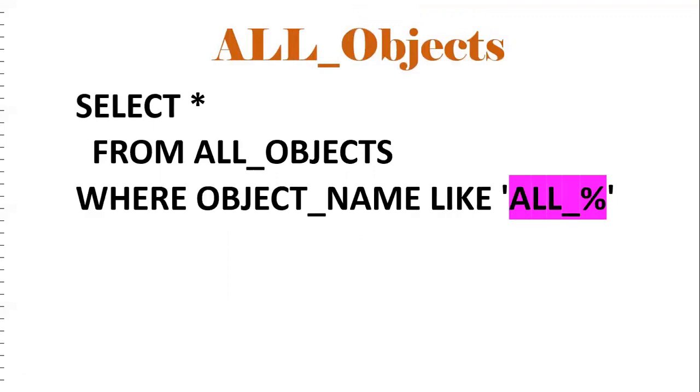If you want to know what objects are available, or what views are available in the database, you can fetch that information by querying ALL_OBJECTS.